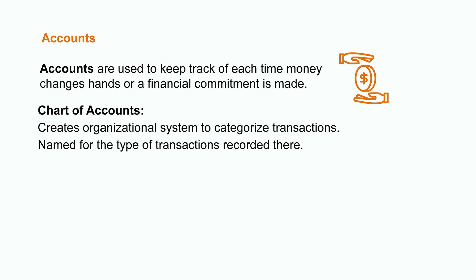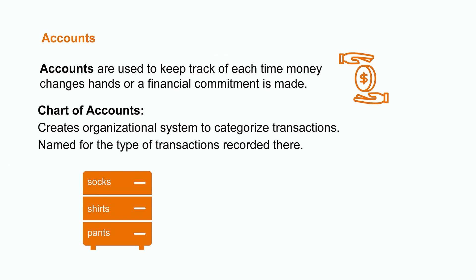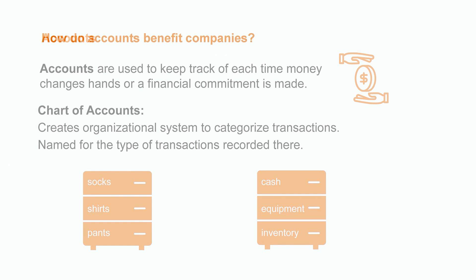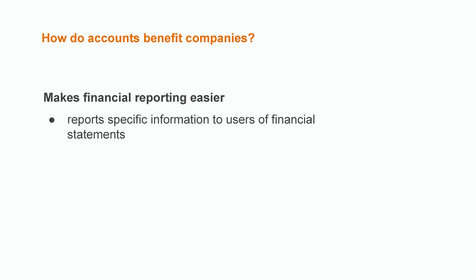Companies typically prepare a listing called a chart of accounts, which contains a variety of individual categories. This creates an organizational system that allows them to separate and group transactions based on their nature. The name or title of each account is based on the type of transactions that are recorded there. Going back to the bedroom dresser — to make things more efficient, we've separated our clothing drawers into different categories. Companies using this same idea will track and separate out financial information using accounts, such as cash, equipment, or inventory.